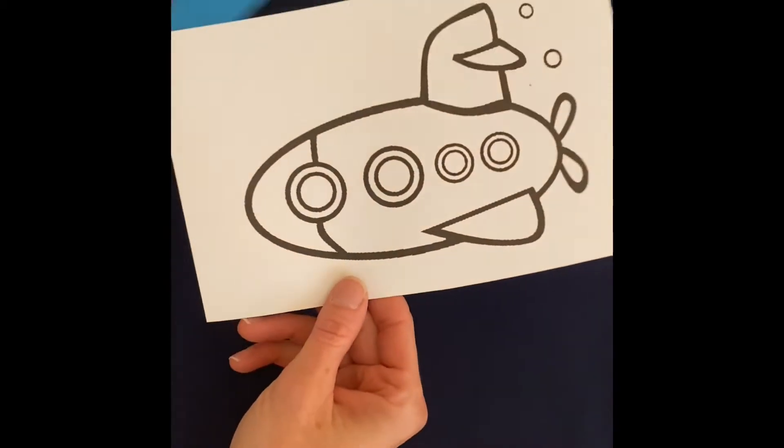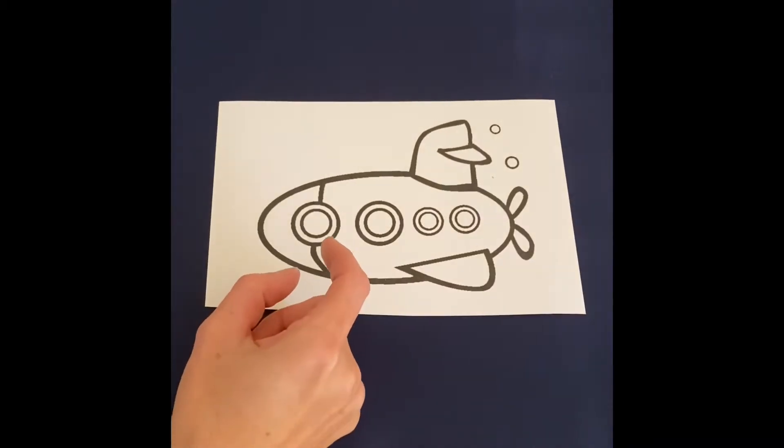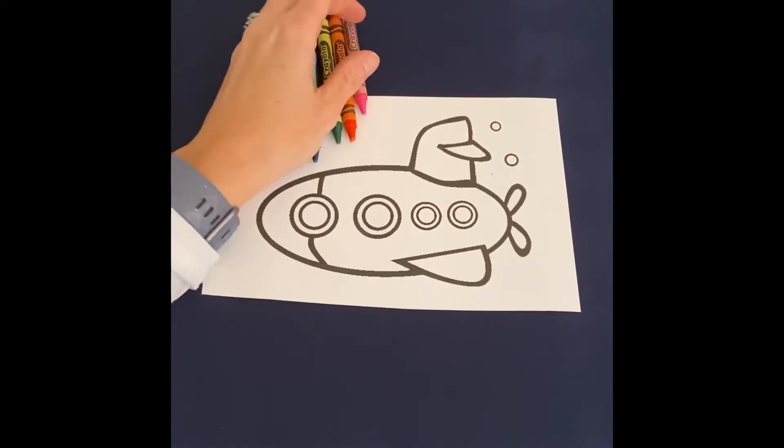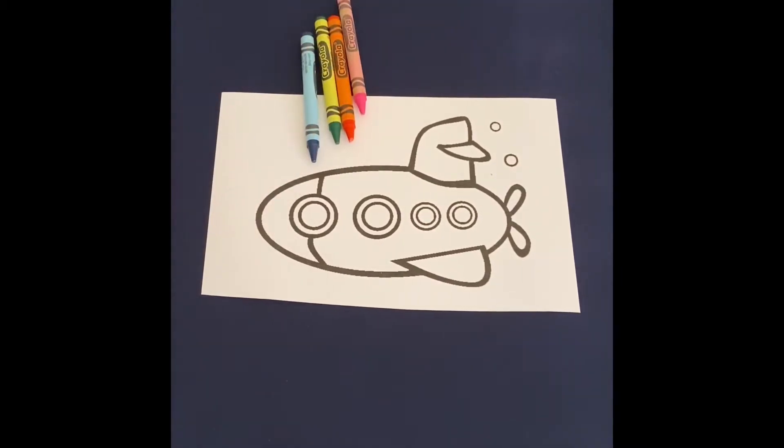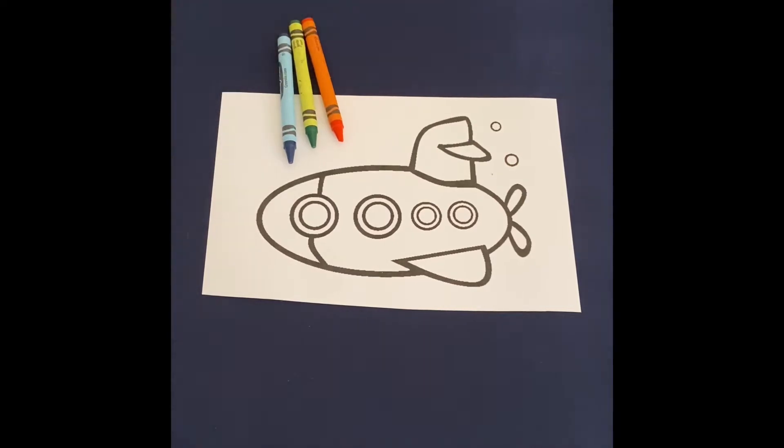I'm going to do the submarine first, but if you wanted to do it the other way around, that's totally fine too. We're going to decorate our submarine. I think I'm going to use some crayons today, but you can use whatever you'd like - watercolor paints, daubers, whatever you'd like.